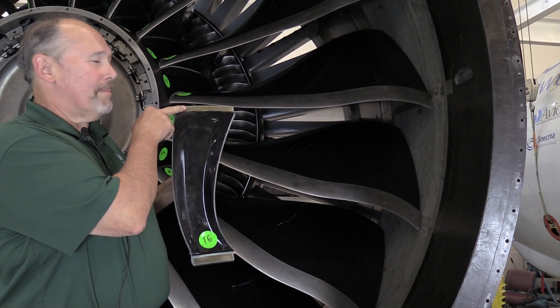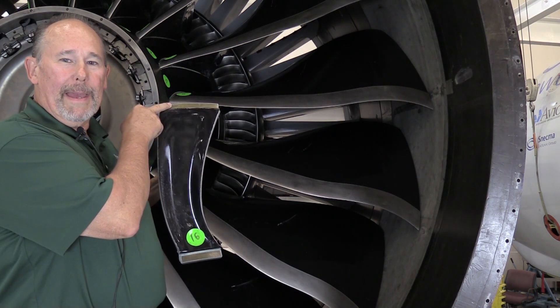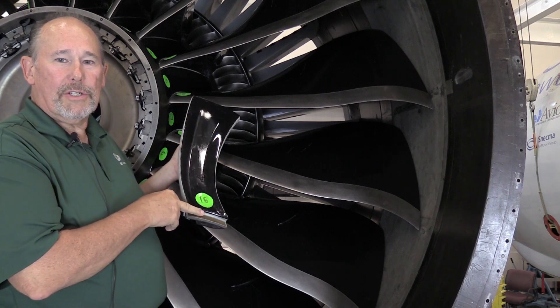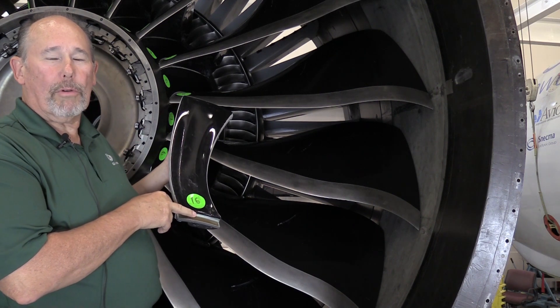The trailing edge should be underneath the flow path while the leading edge should be trapped underneath the support ring.